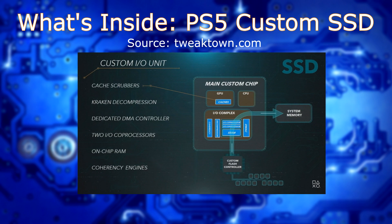The real power of this design though comes with the custom I/O unit. Not only are there custom cache scrubbers and a dedicated DMA controller that owns 12 channels across all 6 chips, but there are also two I/O coprocessors to help improve throughput and on-chip RAM as well. With this on-chip RAM, you have such great spatial locality that RAM access is pretty much instant in this controller. And there's also something called a coherency engine, which basically oversees the operations of this custom chip.